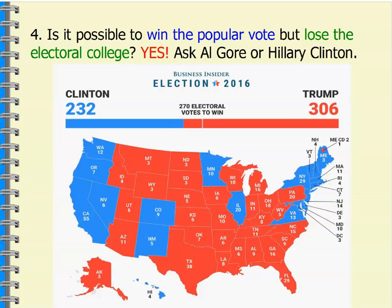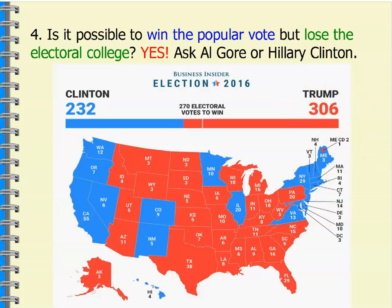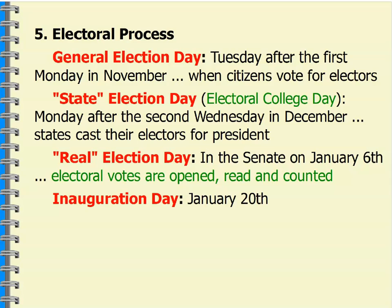In the Clinton vs. Trump race, losing what was a Democratic blue firewall of Wisconsin, Michigan, and Pennsylvania, Trump was able to win those states and thus win 306 electoral votes in the Electoral College, winning the presidential election of 2016. So if you think you can win the popular vote and lose the Electoral College, it is absolutely true.